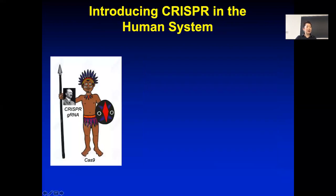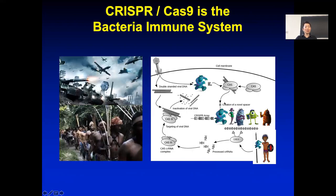So that's the CRISPR-Cas9 system. CRISPR is this RNA, and Cas9 is the protein. Jennifer Doudna from UC Berkeley and Emmanuel Charpentier from Europe discovered this system while sequencing bacterial genomes.